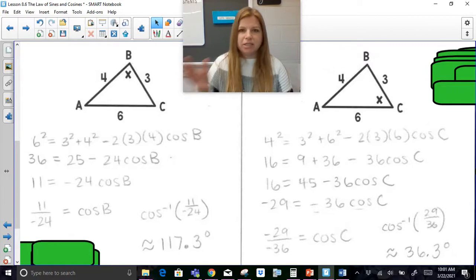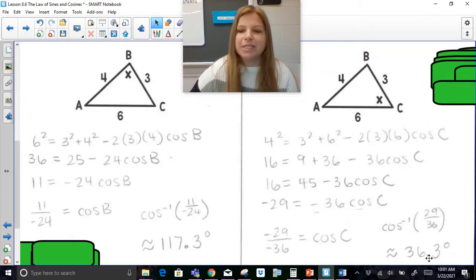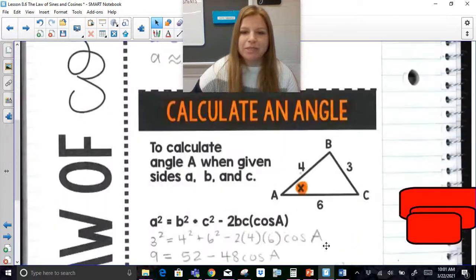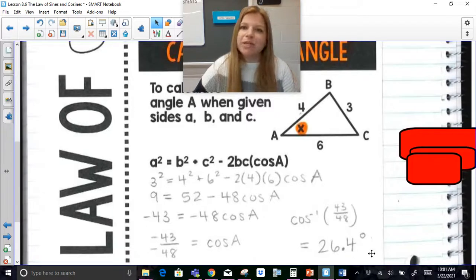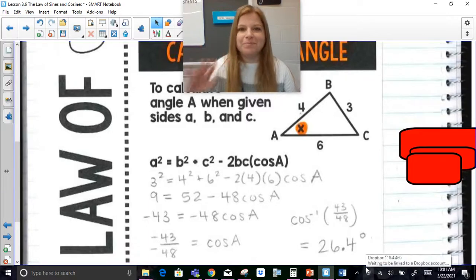So what we actually did here is we actually found all the angles of this same exact triangle, this 3, 4, 6 triangle. So 36.3 is C, 117.3 is angle B. And the first one we actually did was to find angle A, and it was 26.4. And if you add those three up, you get 180, which works out obviously perfectly. Thank you so much for watching this video.